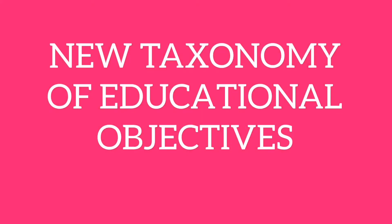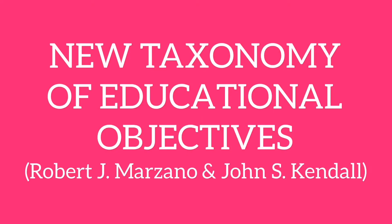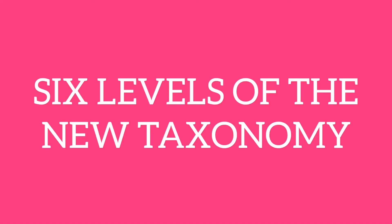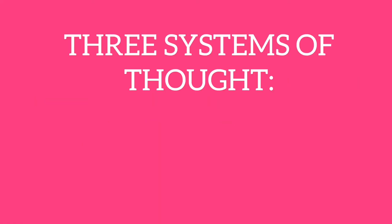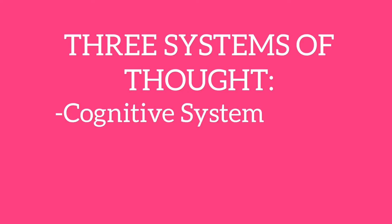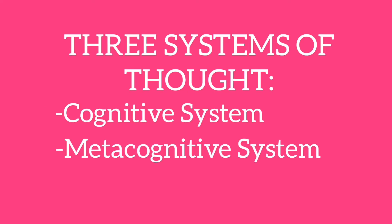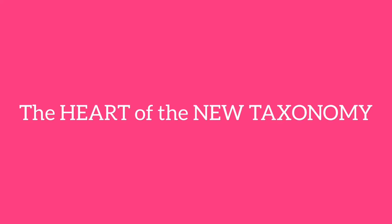Today we're going to learn about the New Taxonomy of Educational Objectives by Robert J. Marzano and John S. Kendall. There are six levels of the New Taxonomy within the context of three systems of thought: cognitive, metacognitive, and self-system. These three systems of thinking are the heart of the New Taxonomy.